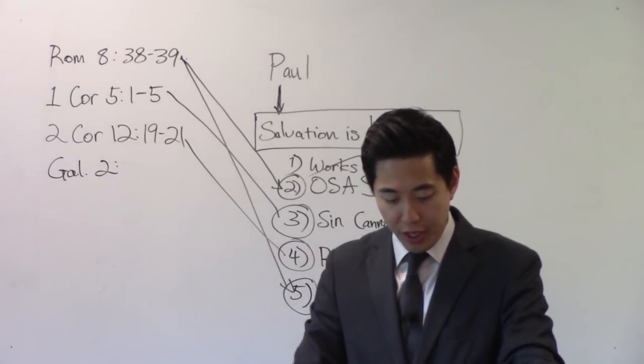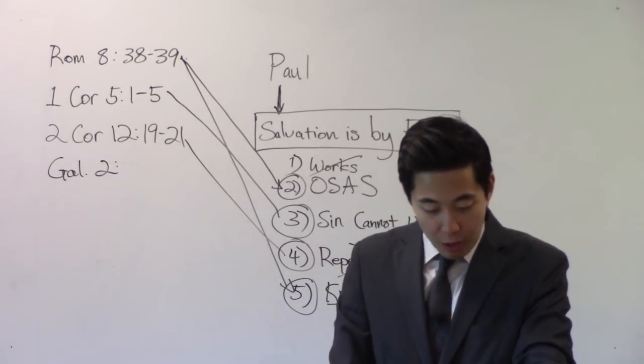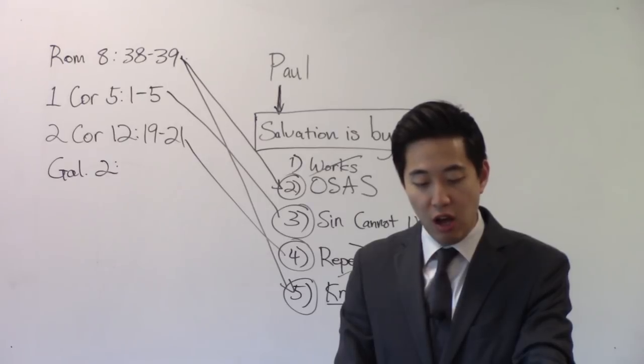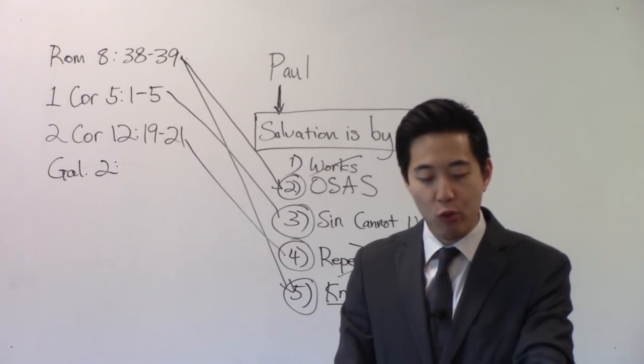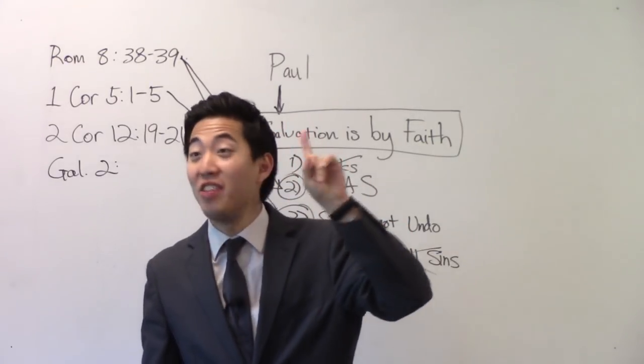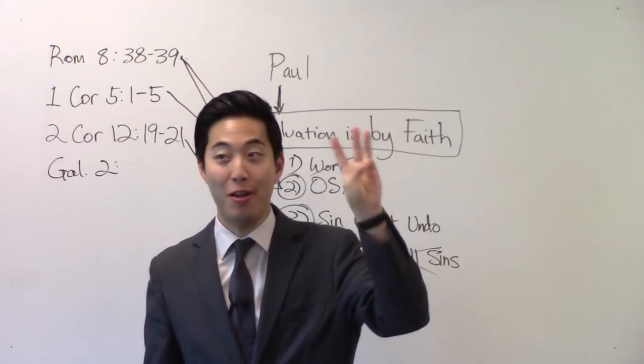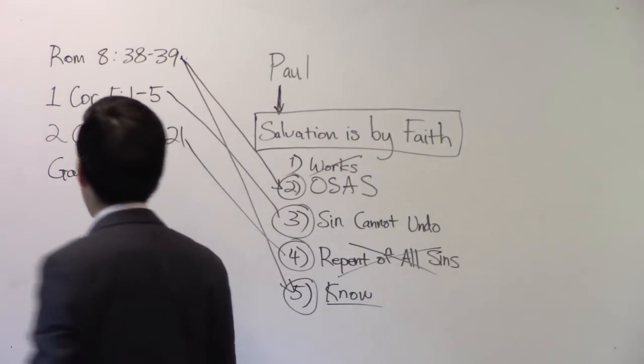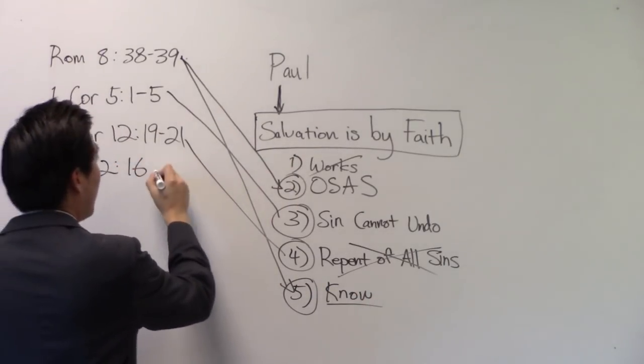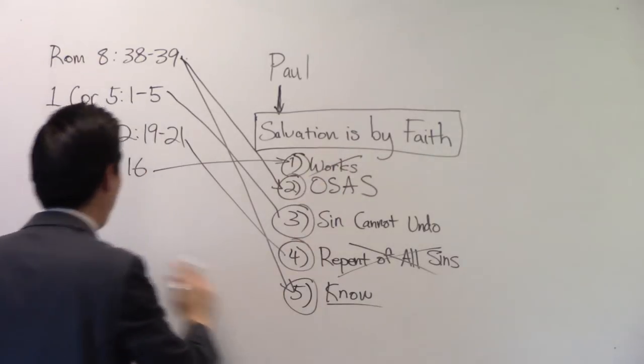Now look at Galatians chapter 2. Long verse, but it's a really good verse. The Bible reads right here that in verse 16, knowing that a man is not justified by the works of the law, but by the faith of Jesus Christ. Even we have believed in Jesus Christ, that we might be justified by the faith of Christ, and not by the works of the law, for by the works of the law shall no flesh be justified. That's the verse, one verse in your whole Bible that mentions three times in it, not works, not works, not works. Paul made it very clear. One verse in your Bible that mentioned three times, not works. So we see here in Galatians 2:16, works as part of the salvation is out.